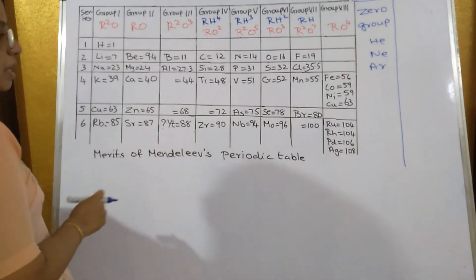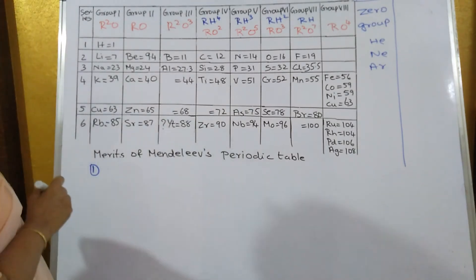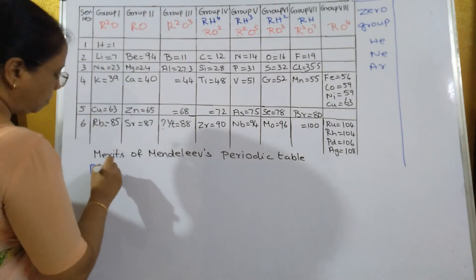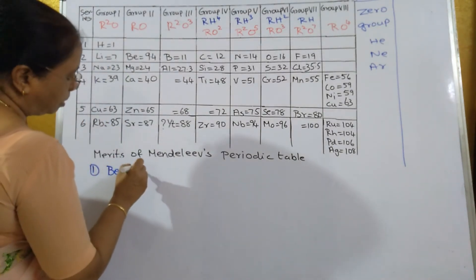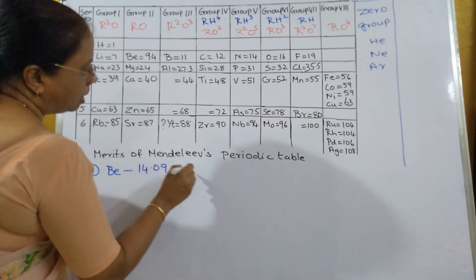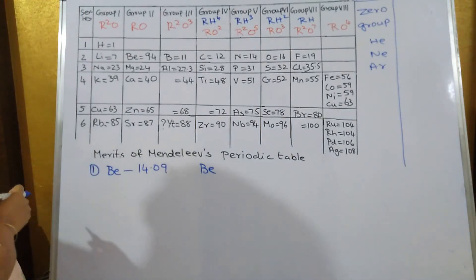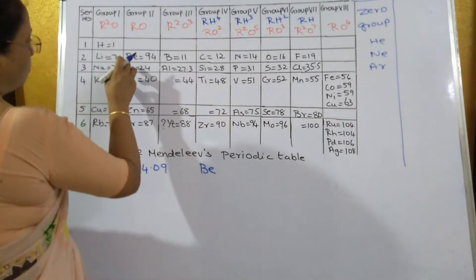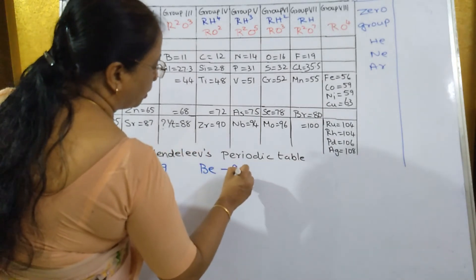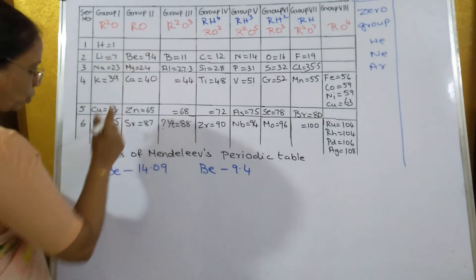What are the merits of Mendeleev's periodic table? When Mendeleev prepared this table, he had to change the atomic mass of certain elements. For example, the atomic mass of beryllium was 14.09 before, but when he arranged the elements according to their properties, he found that the atomic mass of beryllium should be 9.4. Hence, in his table he placed beryllium before boron.